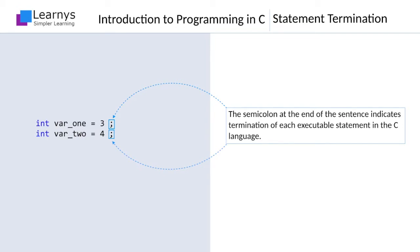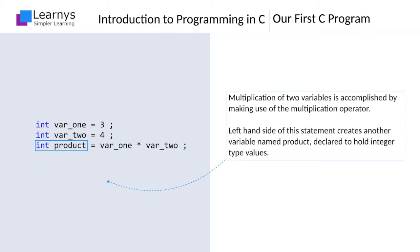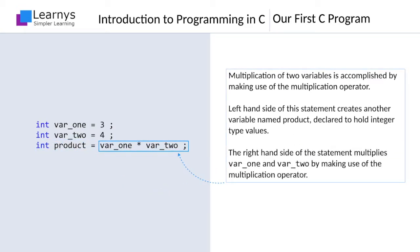Once we have stored the numbers to be multiplied, we need to instruct the machine to multiply the numbers. The simple task of multiplying two numbers can be accomplished by making use of the multiplication operator, which is also one of the many operators available in the C language. The left-hand side of this statement creates another variable named product, declared to hold integer type of values. The right-hand side of this statement makes use of the multiplication operator and multiplies var_one and var_two.